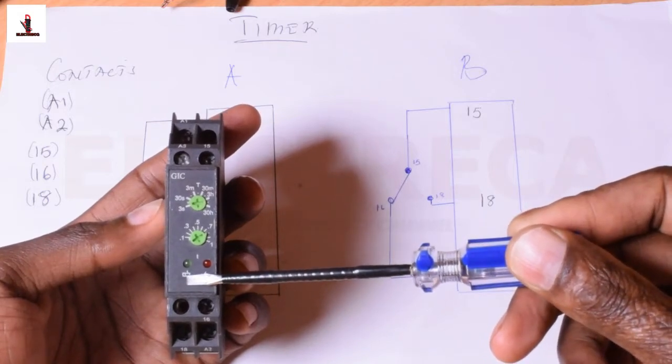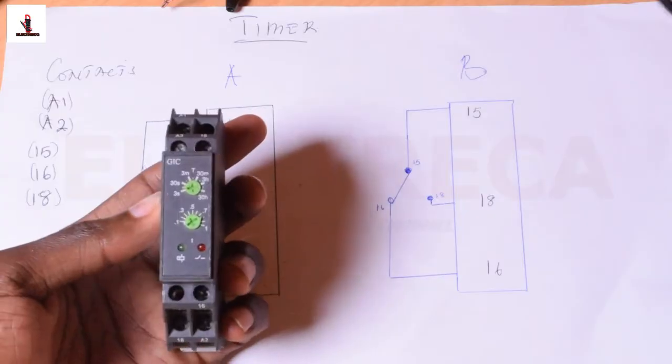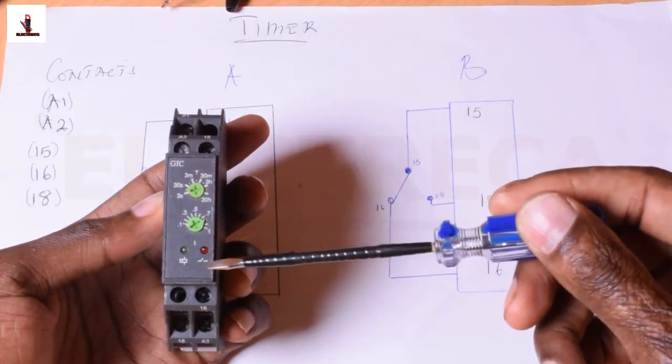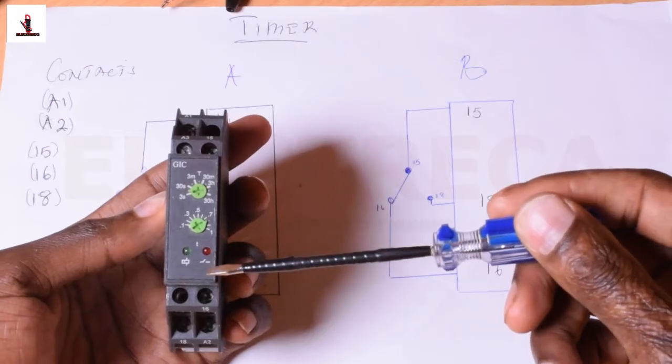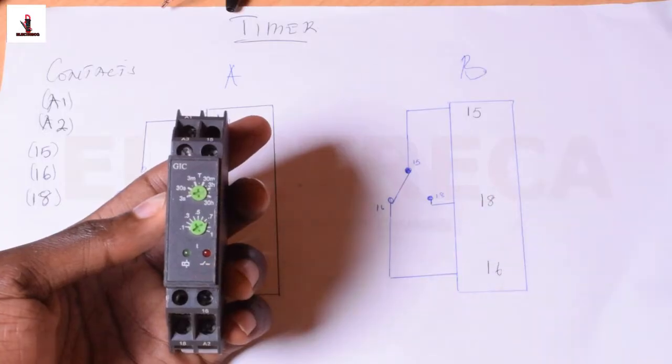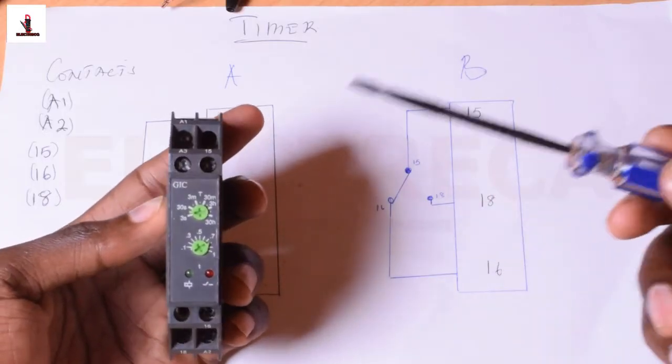One light goes on when you feed it with 240 volts, and then the red one is for contact. In case it has closed, this light will go on. Before it closes, it will not be on.